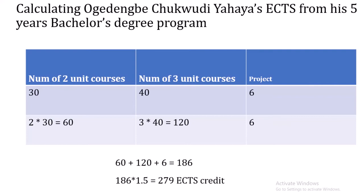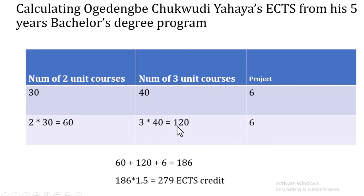Mr. Ogdenbe graduated from the Federal University of Technology Minna in Nigeria as an electrical engineering student. During his five-year program, he did 30 courses of two credit units and 40 courses of three credit units. So we multiply: 2 × 30 = 60, and 40 × 3 = 120. He also did a project worth six credit units, so adding everything together we get 186 total credit units.